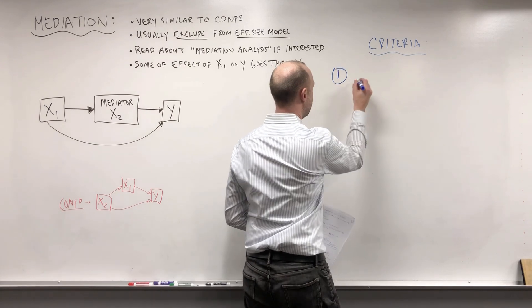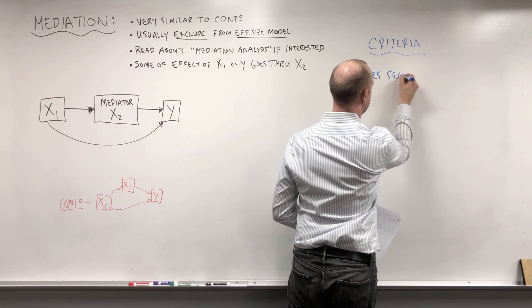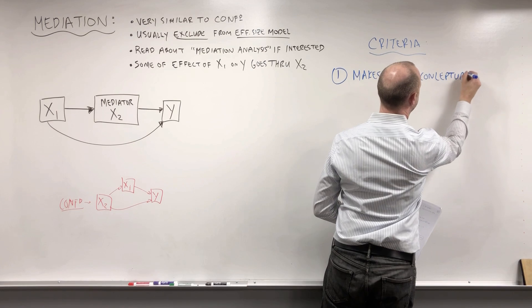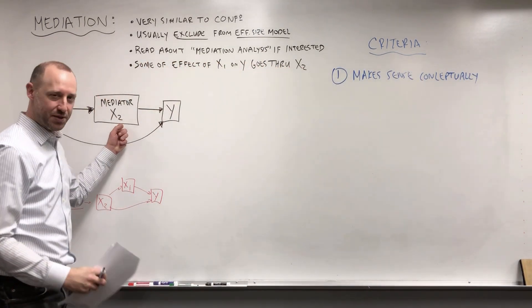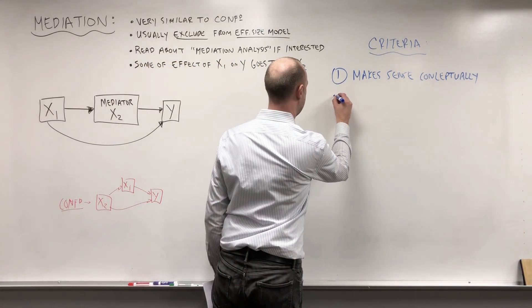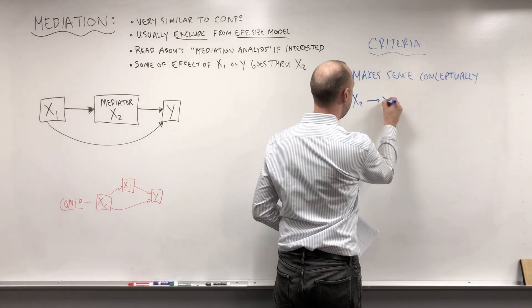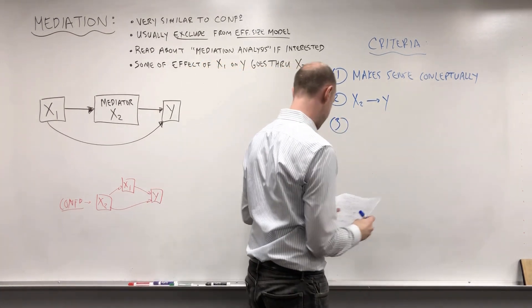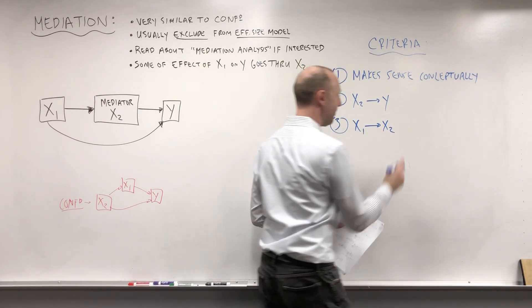The first, and the most important, is that it makes sense conceptually. So that this diagram makes sense based on our understanding of the relationship between these variables. What we're going to want to see is that x2 has some effect on the outcome.